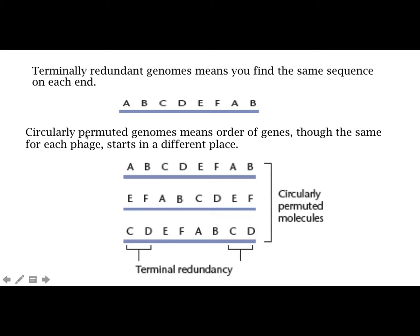Circularly permuted genomes are ones in which, not only are they terminally redundant, but the start place for the redundancy is different from one phage particle to the next. So in one phage we might have a sequence that goes A, B, C, D, E, F, and then A, B. But then in another phage the phasing has shifted, so it starts not with A, B but with C, D — going C, D, E, F, A, B, and then back to C, D. And in yet another phage it has shifted again to E, F, going E, F, A, B, C, D, and then E, F again. So these are the terminal redundancies, and these are the circularly permuted molecules. There are a large number of combinations and a large number of places where the start points can happen.